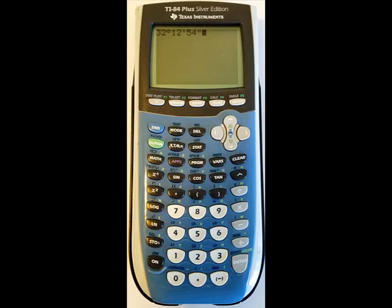Assuming the calculator is in degree mode, press Enter again and the answer displays below. In this example, the decimal format of 32 degrees, 12 minutes, and 54 seconds is 32.215 degrees.